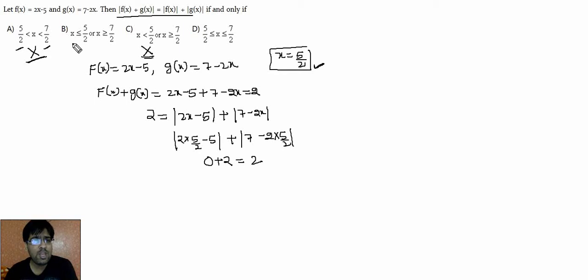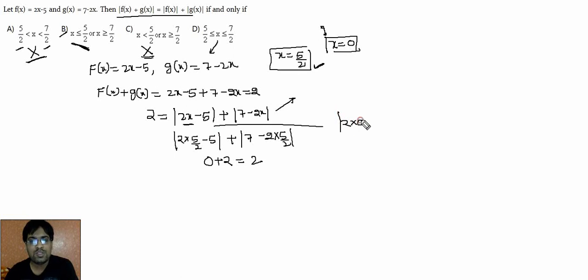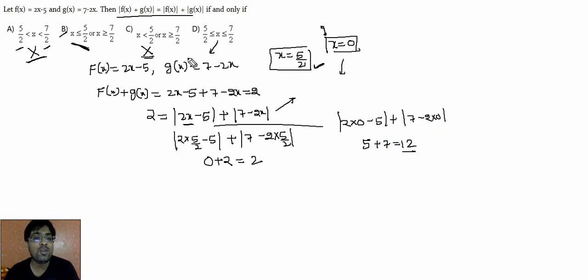Now the fight is between options B and D. In option B, x ≤ 5/2; in option D, x ≥ 5/2. We pick a value x < 5/2 — take x = 0. If x = 0 satisfies the condition, the answer is B; if not, the answer is D. Putting x = 0: |2(0) - 5| + |7 - 2(0)| = 5 + 7 = 12 ≠ 2. So x = 0 does not satisfy the condition, meaning option B is also eliminated. The answer is D.